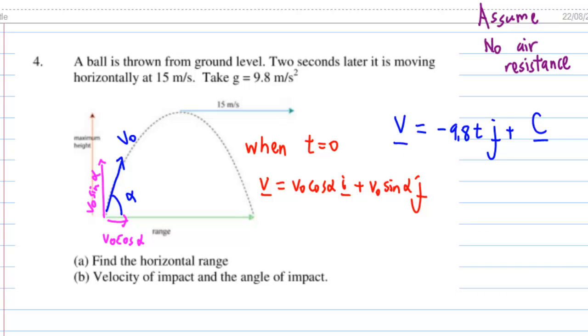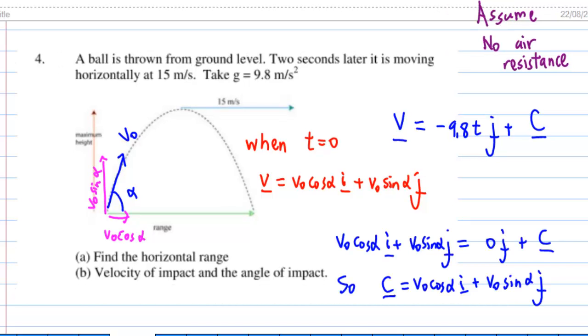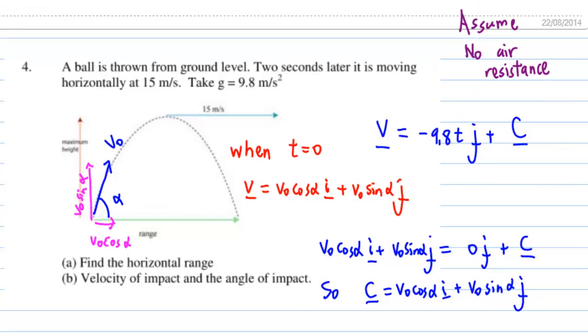To determine unknown constant vector, we need initial condition. When t equal to 0, V is V0 cosine alpha i plus V0 sine alpha j. Putting t equal to 0 into both sides of this equation, we get left hand side is V0 cosine alpha i plus V0 sine alpha j, and the right hand side is 0 j plus a constant vector. So the constant vector is V0 cosine alpha i plus V0 sine alpha j.